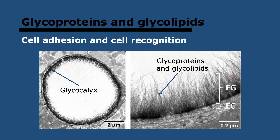This is a topic from the syllabus: glycoproteins and glycolipids. Glycoproteins are proteins with a carbohydrate attached, and they are often found in the plasma membrane with a carbohydrate projecting into the exterior. Glycolipids are very similar — they're lipids with a carbohydrate attached, also found in the membrane with a carbohydrate projecting outward. These are also involved in self-recognition and can help the immune system distinguish between self and non-self.